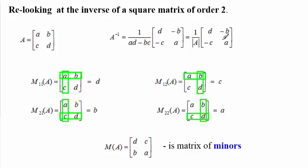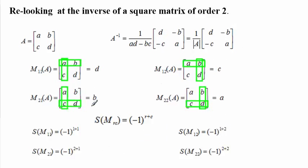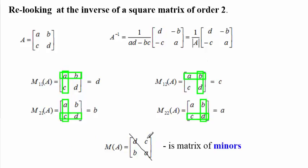Now we want to compare this matrix of minors with the matrix we reported here. Notice one interesting thing: we have managed to get the main diagonal of that matrix, but on the second diagonal this matrix is quite different from that. That means we should go further and see how we can get that. We've managed to see how we can get the main diagonal. The difference between this matrix and that is the signs — minus C and minus B — and the positions are also different.